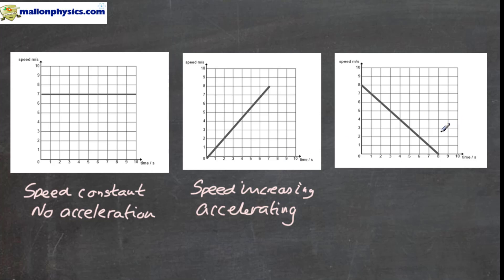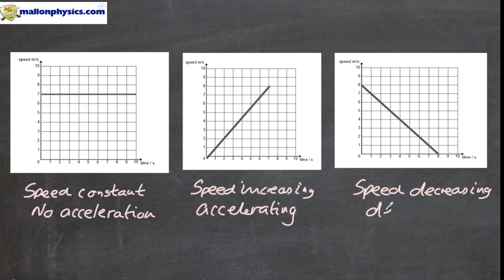Looking at the third speed-time graph, the speed decreases from eight meters per second down to zero meters per second over eight seconds — so the speed is decreasing. When the speed is decreasing, we use the word decelerating: the object is decelerating in this motion. So that's how we interpret speed-time graphs: if the speed is increasing, the object is accelerating; if the speed is decreasing, it is decelerating; and if the speed remains constant, there is no acceleration.